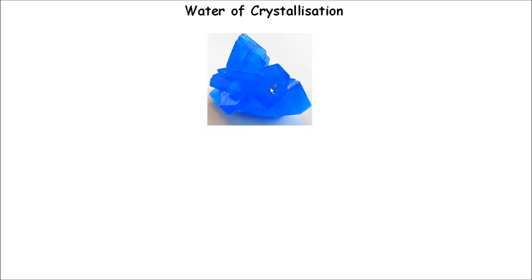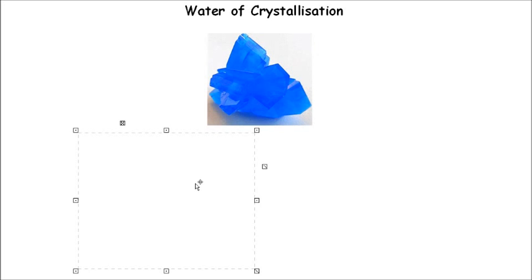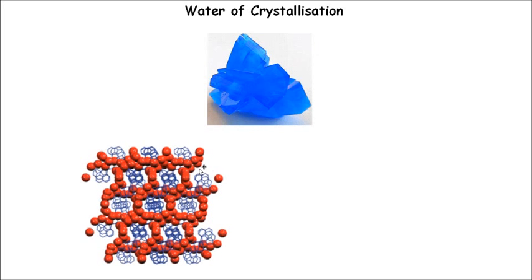As you can see here, we've got a picture of a crystal. This is a copper sulfate crystal. Crystals obviously have regular arrangements and a definitive structure to them. The reason they have this structure is because of the presence of water.